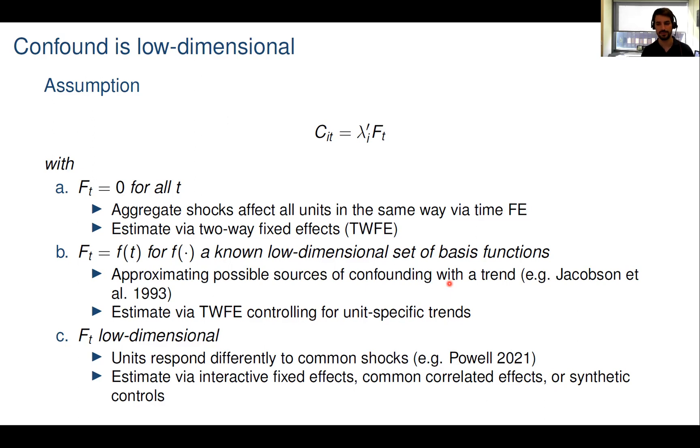To stick with my previous economic example, the state fixed effects alpha_i accounted for time-invariant state-specific differences in youth employment rate, and the time fixed effects gamma_t accounted for overall macroeconomic conditions in the US. But we may further want to allow for state-specific differences in trends in the youth employment rate. In order to do so, we would take F_t as a linear trend. This is more flexible than case A. Nevertheless, one needs to come up with a reasonable trend structure and justify why the chosen trend structure plausibly approximates the latent sources of confounding.